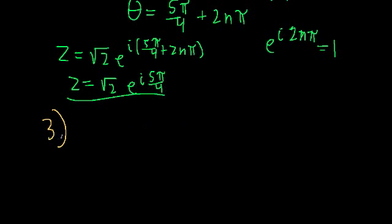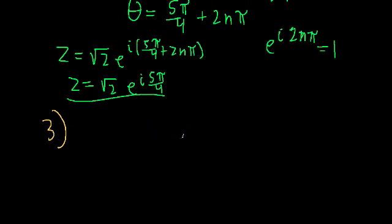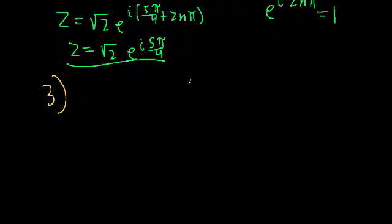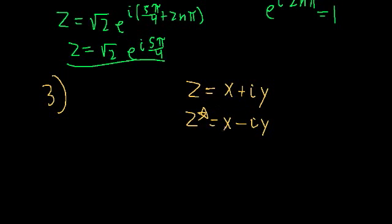The third topic which I want to talk about is complex conjugates. Now we know that if we have a complex number z, we can write that in Cartesian form as just x plus iy. And we know that it has the complex conjugate z star, which is equal to x minus iy. Same real part, negative imaginary part.